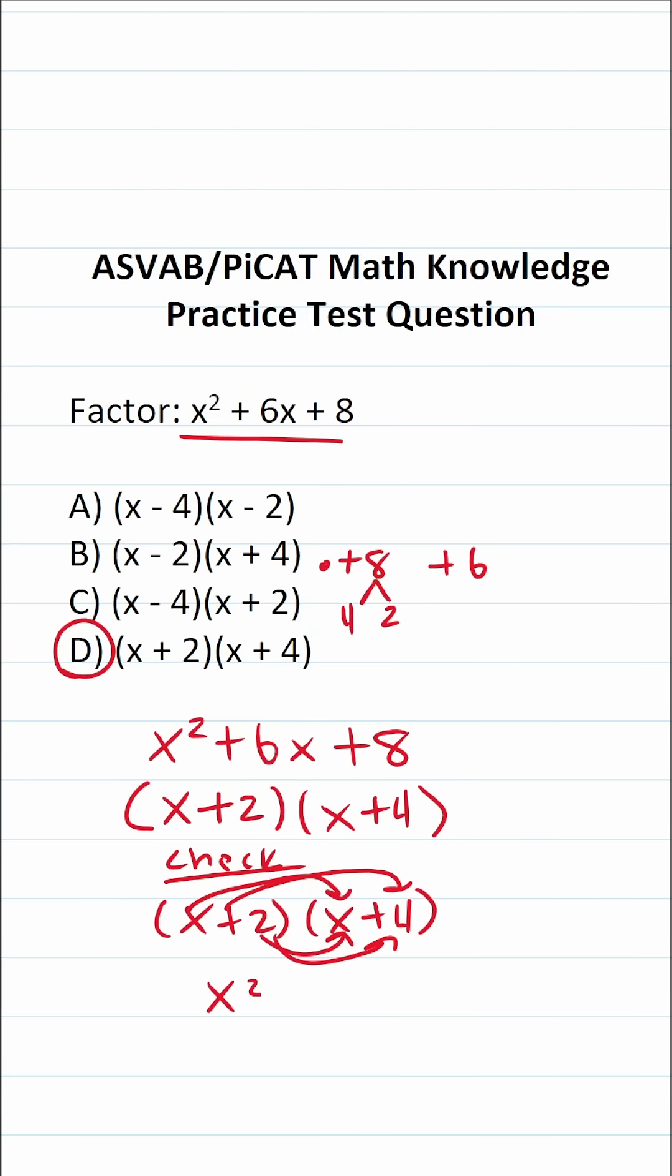x times x is x². x times four is 4x. Two times x is 2x. Two times four is eight. Let's simplify this by combining these two like terms.